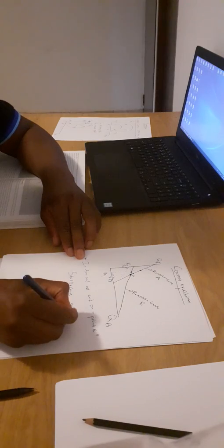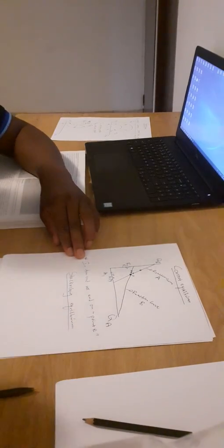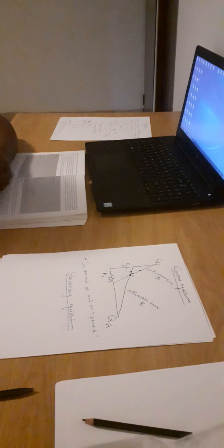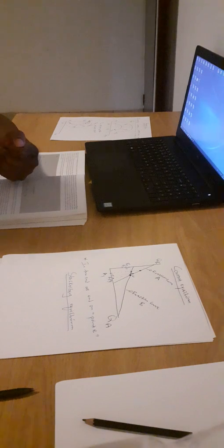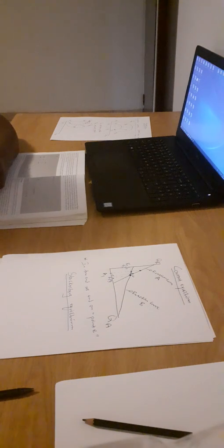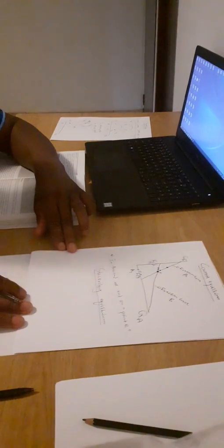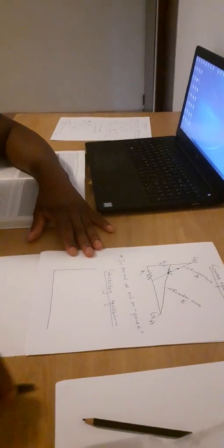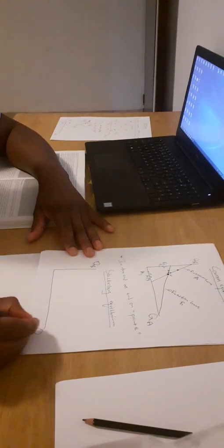The Stackelberg equilibrium says that one of the firms will be more sophisticated — there will be a clever one. The clever one will play safe and want to make more profit than the other one. So if B is the sophisticated one, B will choose a point on A's reaction curve where B is making more profit. Let me give you an example.